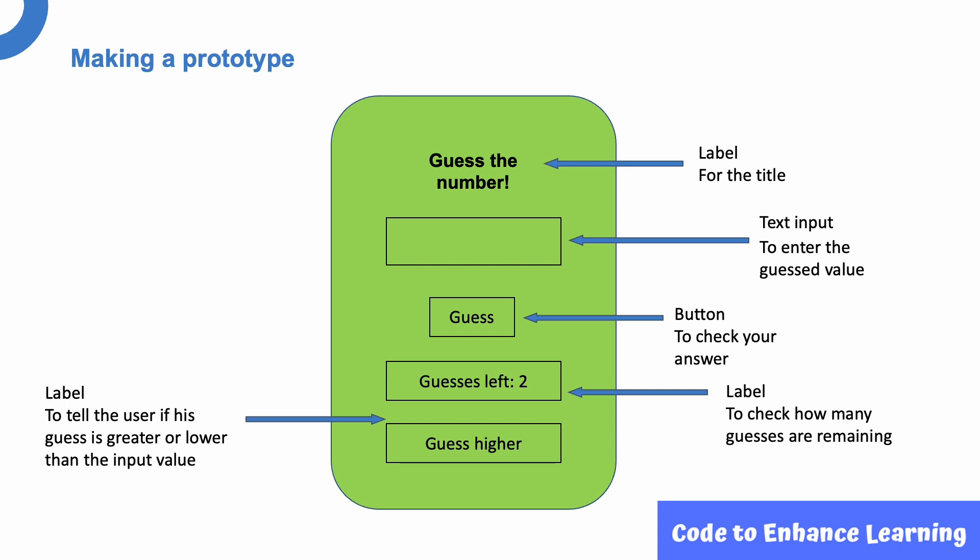Let us start by designing the prototype of the app. Before making it in Thunkable, we will create a draft in a notebook. As we need the player to guess the number as the input, I am using the component text input to enter the guess value. The button component will be used as an event to check whether the number generated and the number guessed are the same.